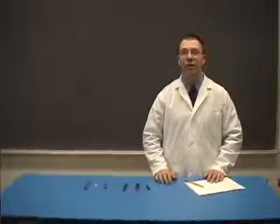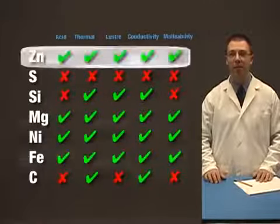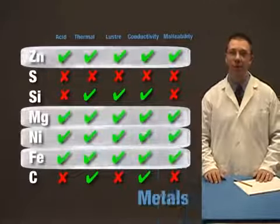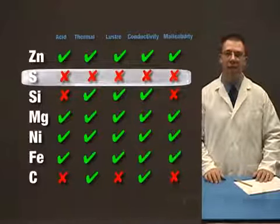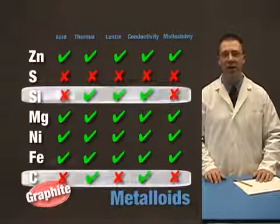After conducting these experiments, we can conclude that the substances that passed all five tests are metals. The substances that failed all five tests are non-metals. And the substances that half passed and half failed the tests are metalloids.